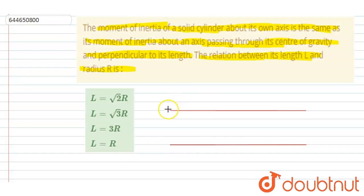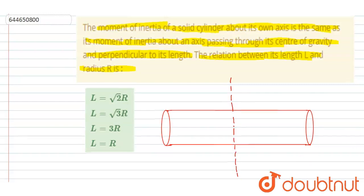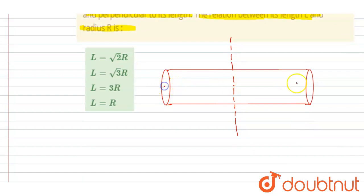This is the cylinder, and about an axis passing through the center. The moment of inertia is the same as that of an axis passing through this axis. Let me draw the axis. About this axis, the moment of inertia is I₁, and moment of inertia about this axis is I₂. So I₁ equals I₂.